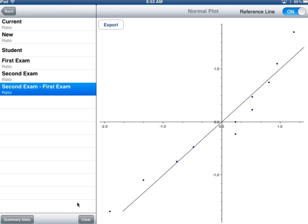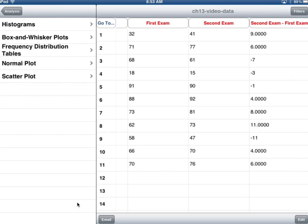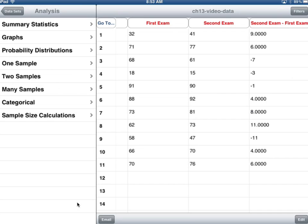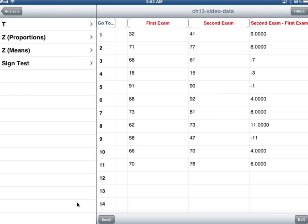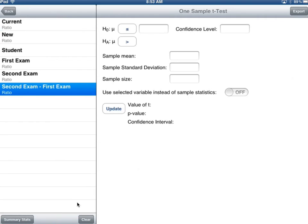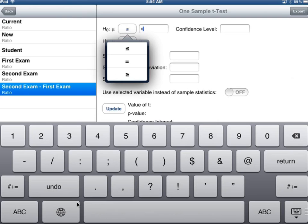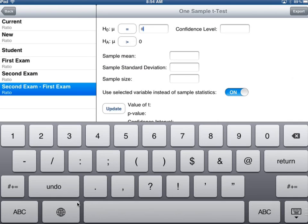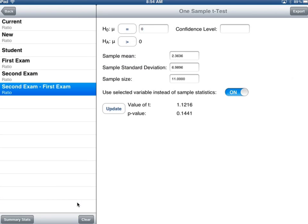I'm going to go back, select one sample. Again, we're working with the differences, so we're only dealing with one sample. t-test. There's the second minus the first. I'm expecting it to be greater than zero. I'm going to make this equal zero and greater than zero. I'm going to use the selected variable rather than entering sample statistics. I'll update it. There's my p-value of 0.1441 and there's the value of t. Based on that, I would fail to reject and say there's not enough evidence to suggest the intervention helped.